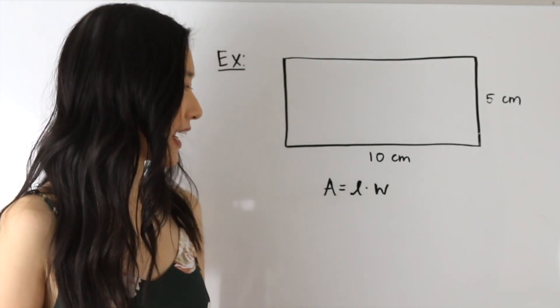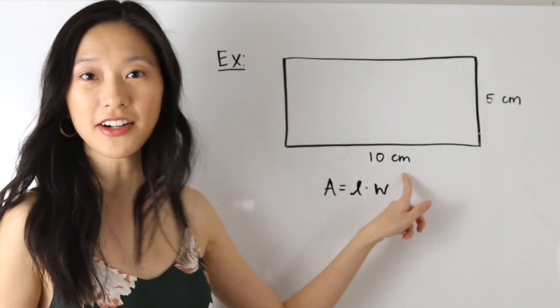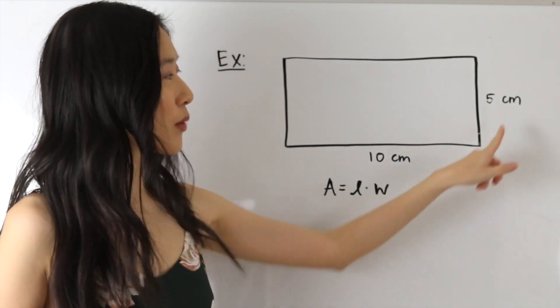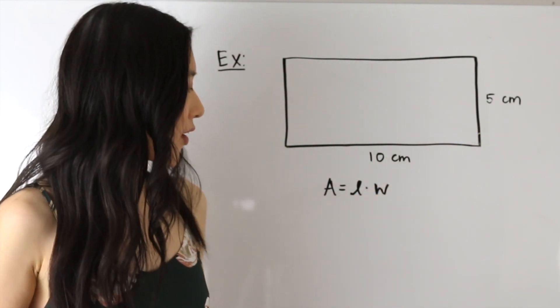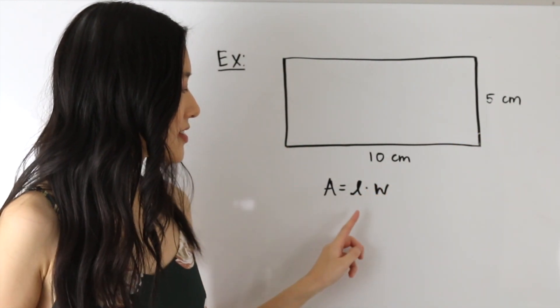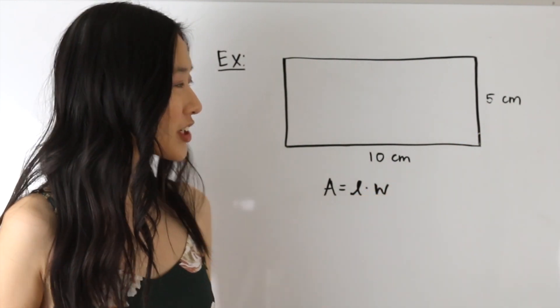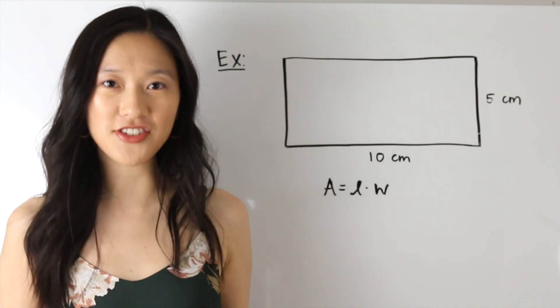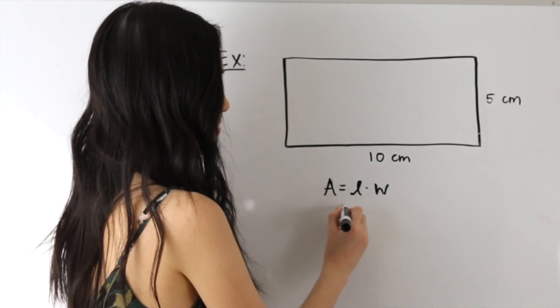So here we have a rectangle with a length of 10 centimeters and a width of 5 centimeters. Our formula tells us that if we multiply the length times the width we should get our area. So let's go ahead and do that.